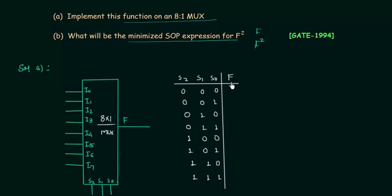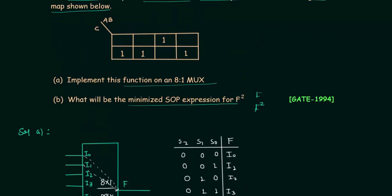The output is F. When the selector variables are 000, input i0 is linked to output F. When S2 and S1 are 0 but S0 is 1, i1 is linked to the output. In the same way, we have i2, i3, i4, i5, i6, and i7. Now I will copy the K-map given in the problem and place it next to the truth table.